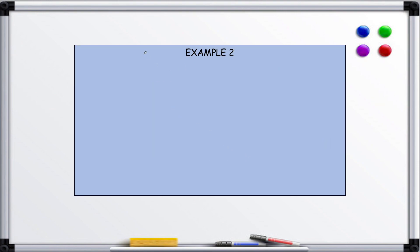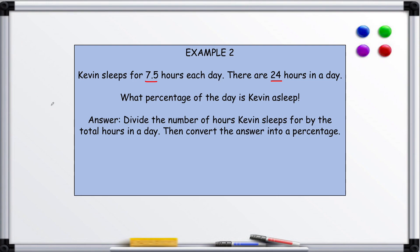Example 2: Kevin sleeps for 7.5 hours each day. There are 24 hours in a day. What percentage of the day is Kevin asleep? So we divide 7.5 by 24—divide the number of hours Kevin sleeps for by the total hours in a day, then convert the answer into a percentage.